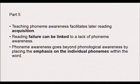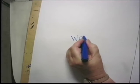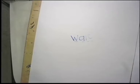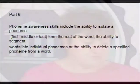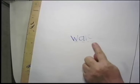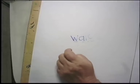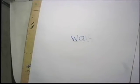When we say a word like 'wait,' we say W-A-T — not W-A-I-T, especially not with younger children. Phoneme awareness skills include the ability to isolate a phoneme — the first, the middle, or the last — from the rest of the word; the ability to segment words into individual phonemes; or the ability to delete a specified phoneme. For instance, to emphasize the W, we can leave it out and say 'eight,' then put it back: 'wait.'